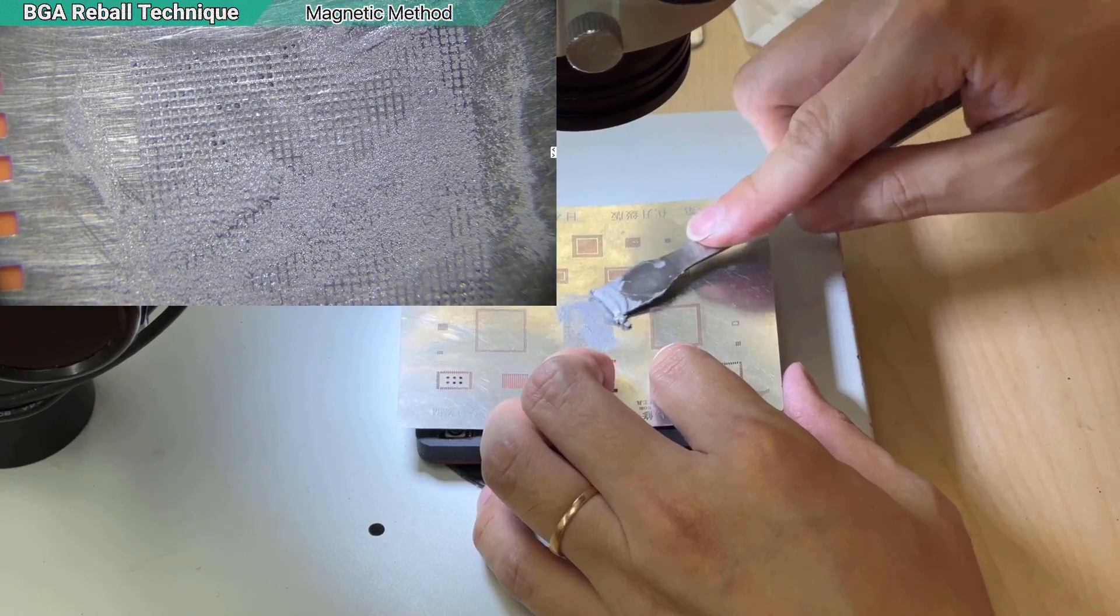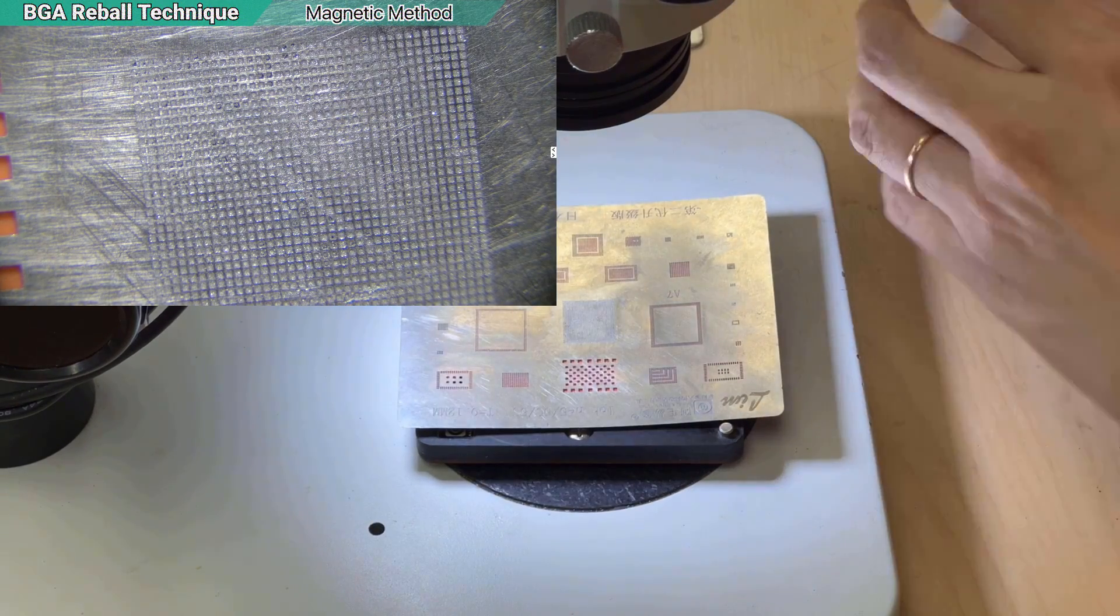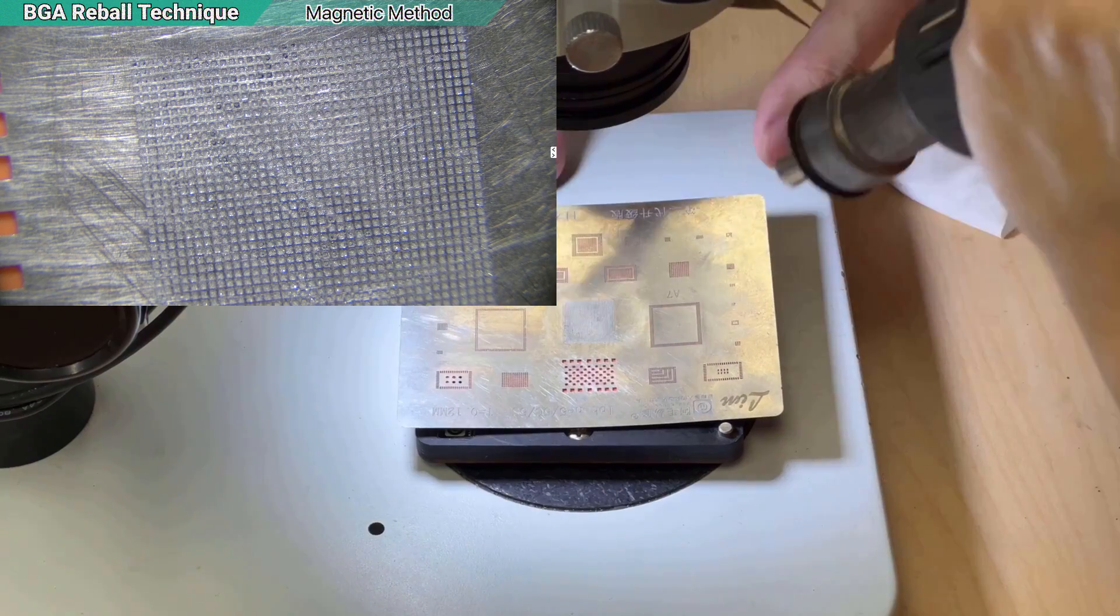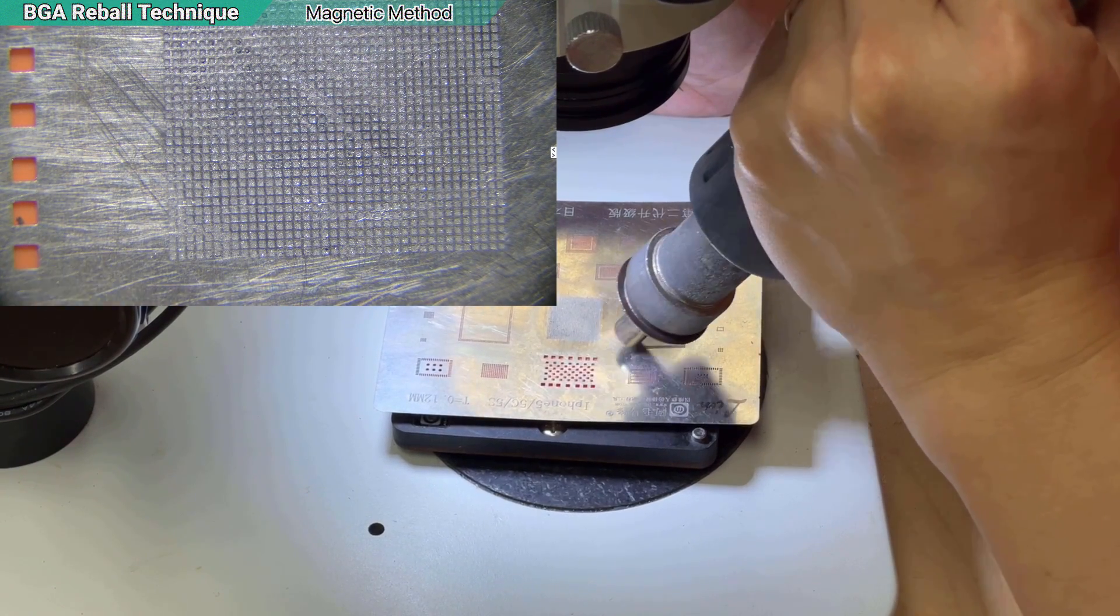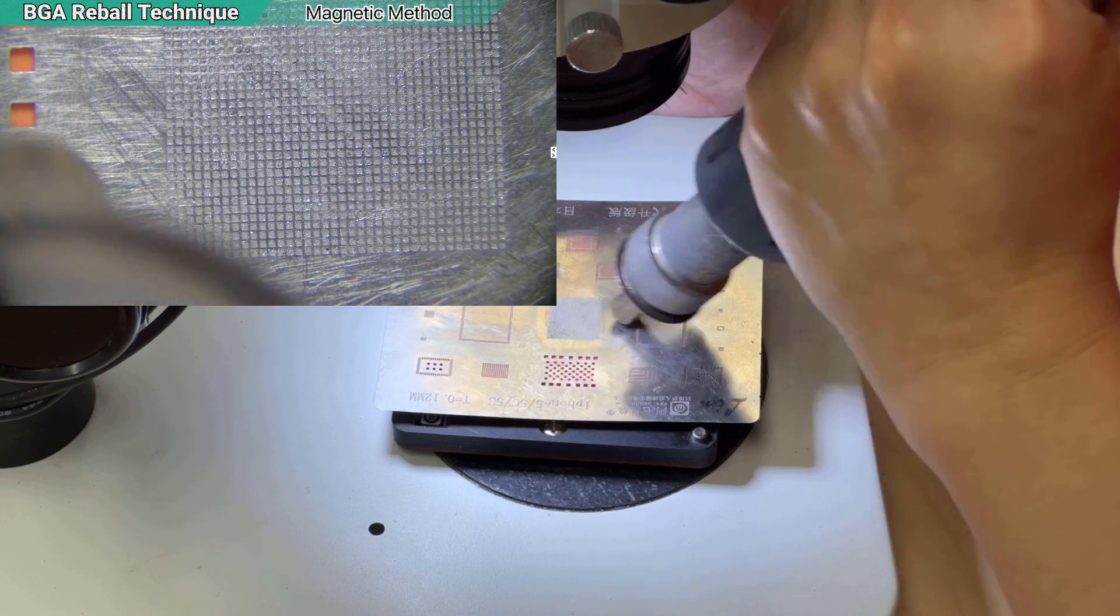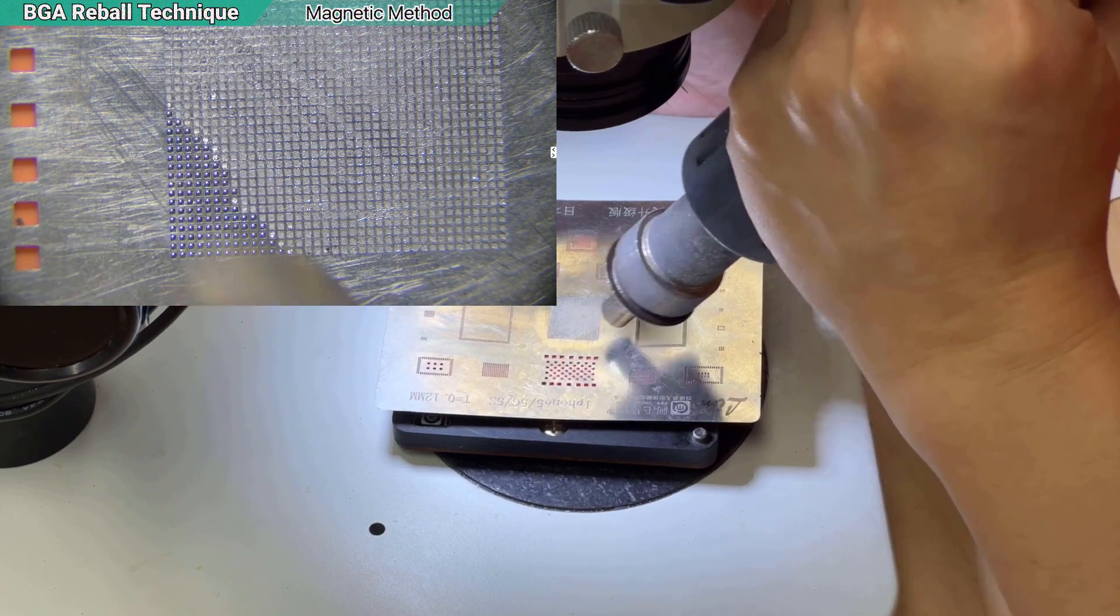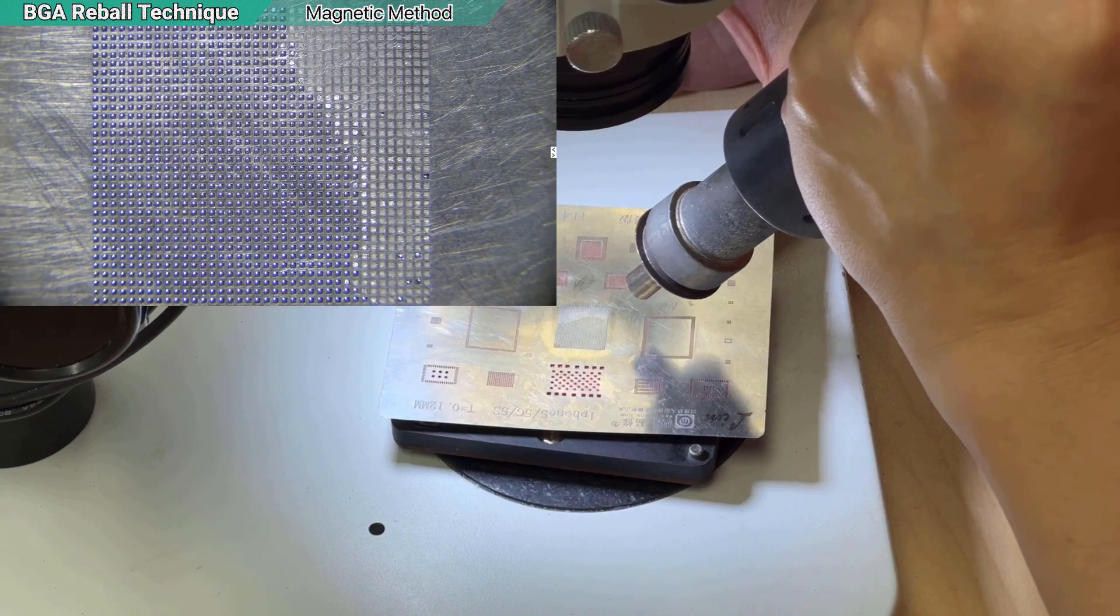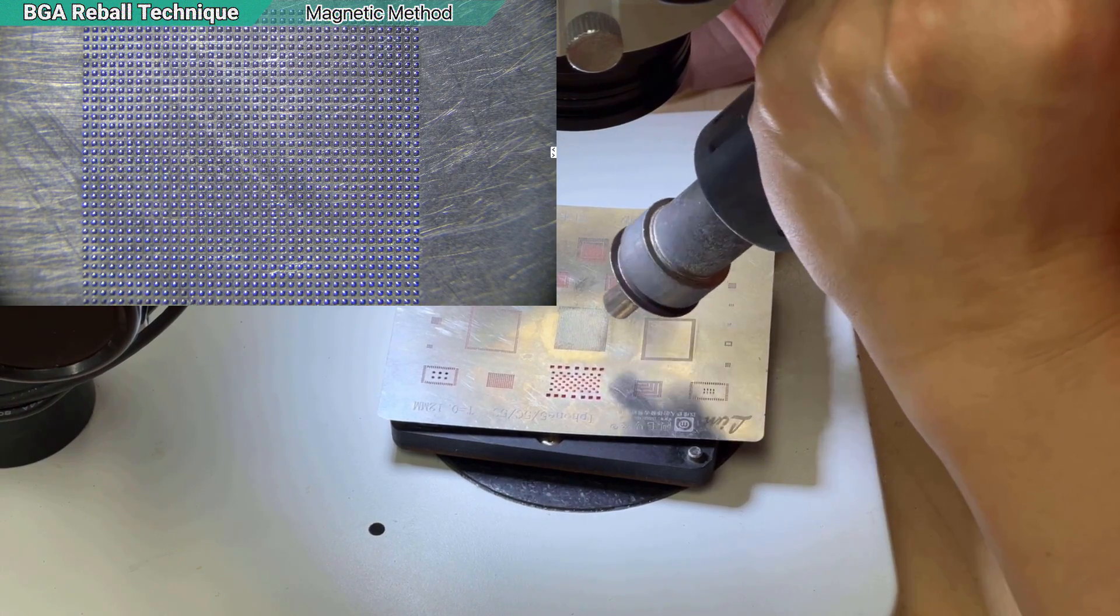You don't need to hold the stencil with the tweezers anymore. So I will begin from the lower left. Warm up a little. Okay, going left, right, left, right, fast like that way. Just see everyone is melted. Okay, it is done.